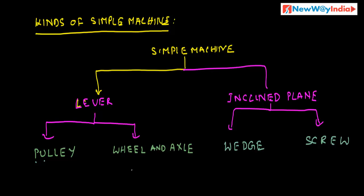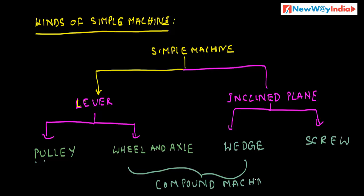By using all these simple machines, we get compound machines. In the next session, we will discuss about compound machines and how they are constructed.